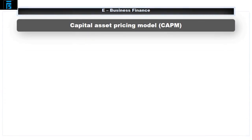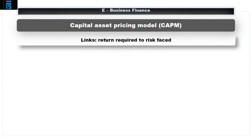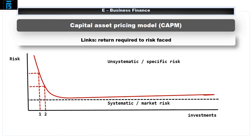Capital asset pricing model. CAPM links the return required by shareholders to the level of risk they face. It does not, however, consider all of the risks as described here. In simple terms, there are two types of risk faced by a company: 1. unsystematic or specific risk, which are the risks linked specifically to a particular organisation, and 2. systematic or market risk, which are the risk of being in the market.